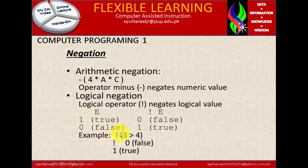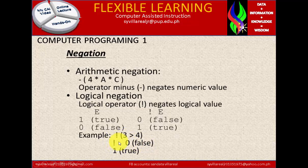Example: NOT (3 greater than 4). Since 3 is less than 4, this is automatically false (0). But you put NOT as negation, therefore it becomes 1. So NOT reverses the answer in a logical expression using the exclamation mark. 3 greater than 4 is false, which is 0. The logical negation exclamation mark means NOT 0 — if it is not 0, then it is 1, true.